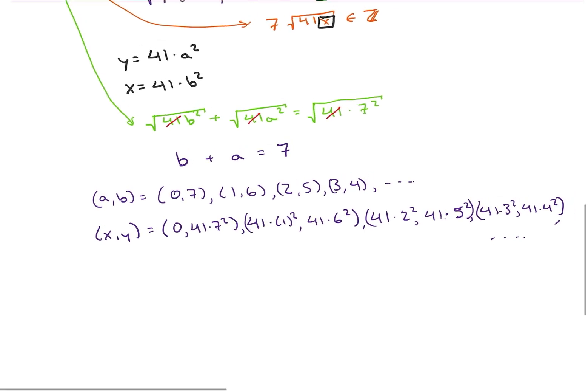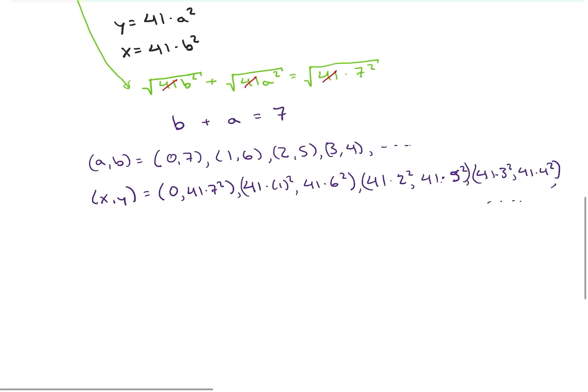So this is going to end up giving us our answers to this equation. So if we go ahead and fill those out, what we're going to get is that (x,y) are these ordered pairs of (0, 2009), which was our original number, which obviously the square root of 0 plus square root of 2009 is square root of 2009, or (41, 1476), trust me on that, or (168, 1025),